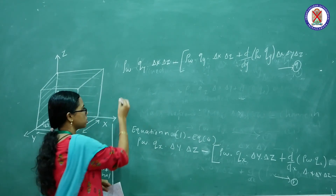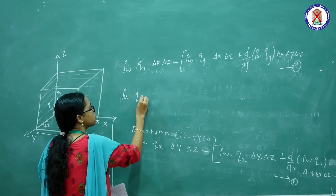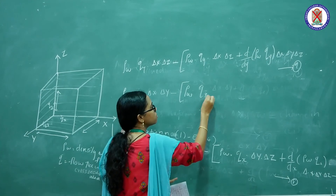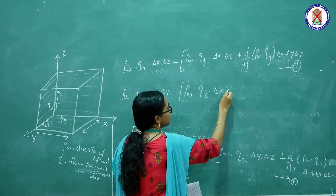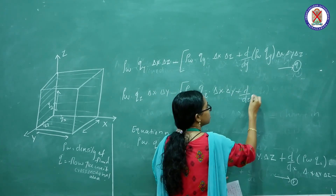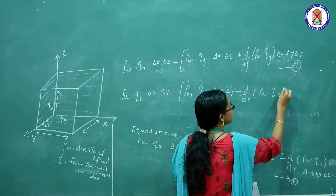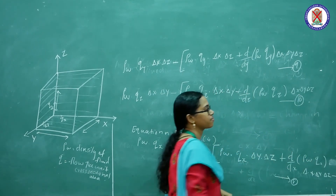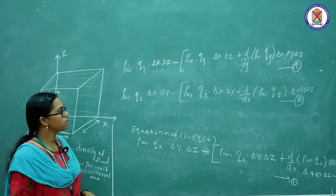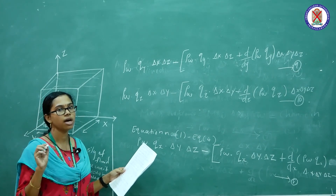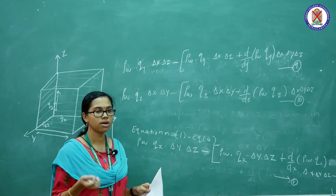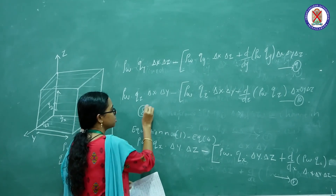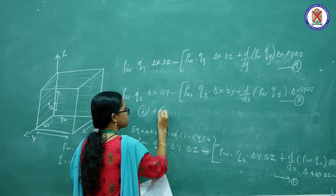And in the z-direction, the equation will be: rho_w into qz into delta x into delta y, minus the corresponding outflow term into delta x into delta y into delta z. This is Equation 10. Next, we have to consider the net flux in the controlled volume. In order to calculate the net flux, we have to equate all three equations: Equation 8 plus Equation 9 plus Equation 10.